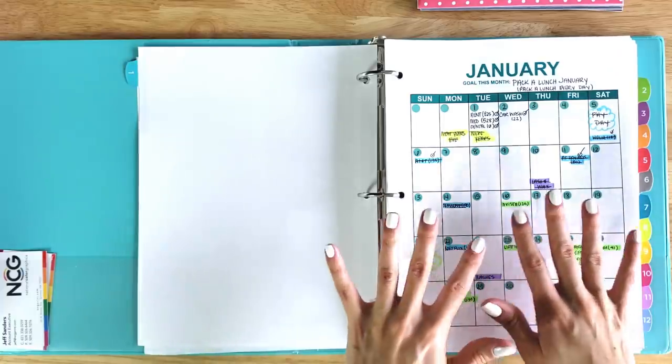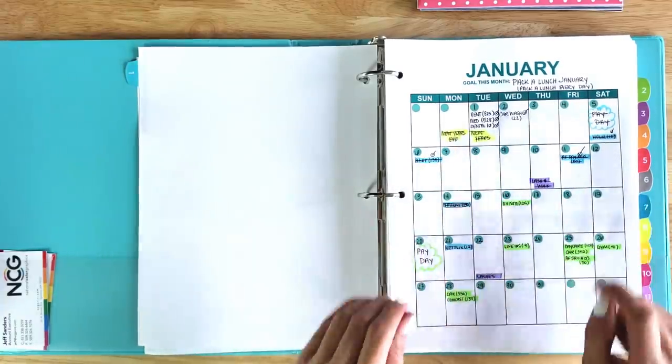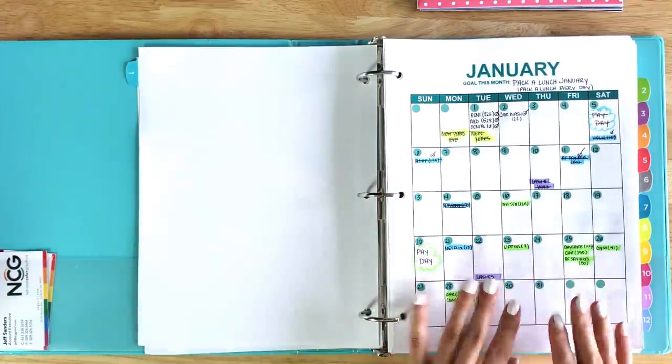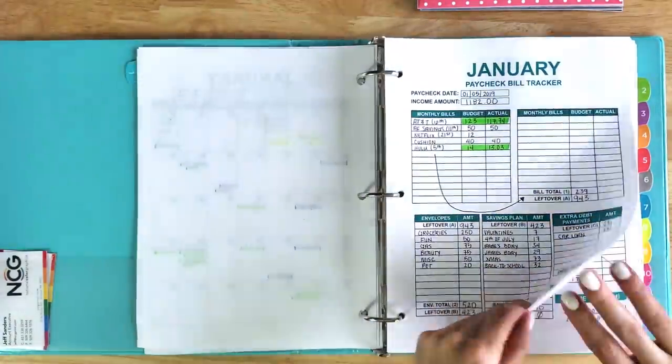I also include in my budget calendar my events, my holidays, and my appointments. This is literally everything that has to be included in my paycheck for the month of January or my different paychecks.